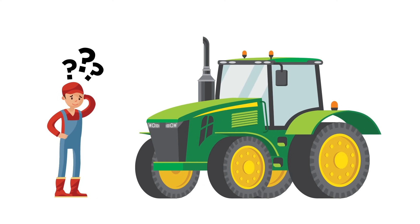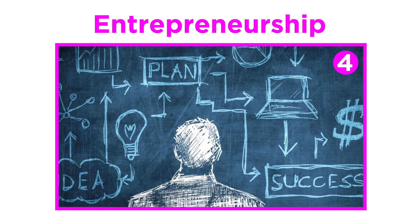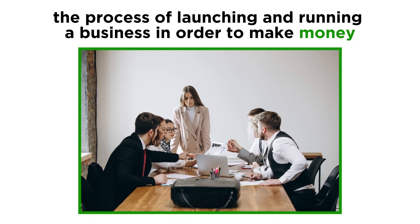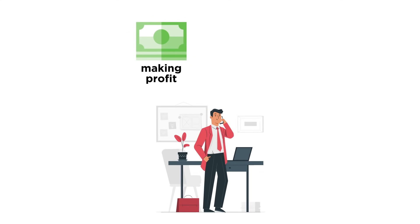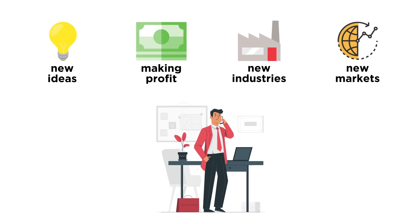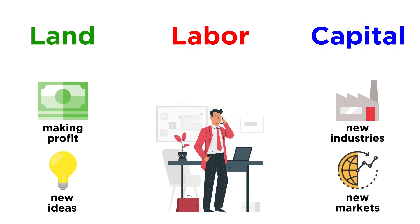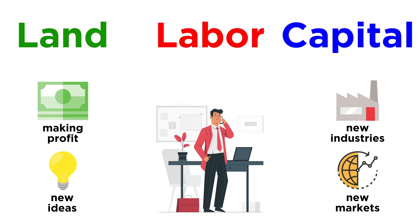For example, it's nice if the farmer has a tractor, but if they don't know how to use it, it's not going to work. The fourth factor of production is entrepreneurship. Entrepreneurship is the process of launching and running a business in order to make money. An entrepreneur takes on financial risks in the hopes of making a profit. They create new ideas and sometimes even create new markets and industries. They also manage the other three factors of production. A successful business knows how to efficiently manage land, labor, and capital in order to make a profit.